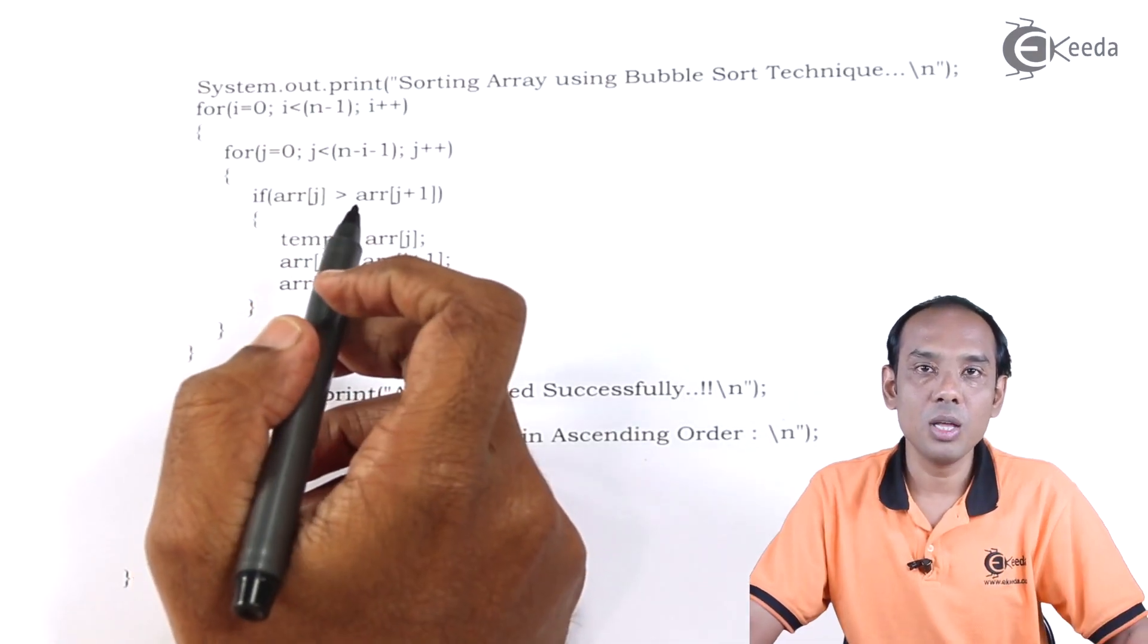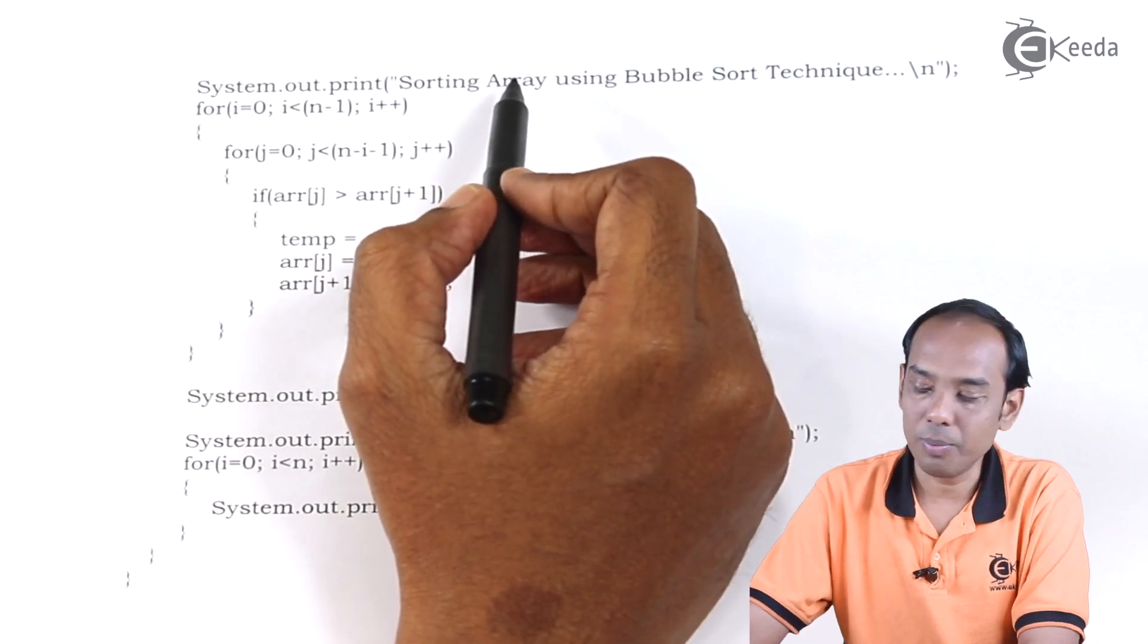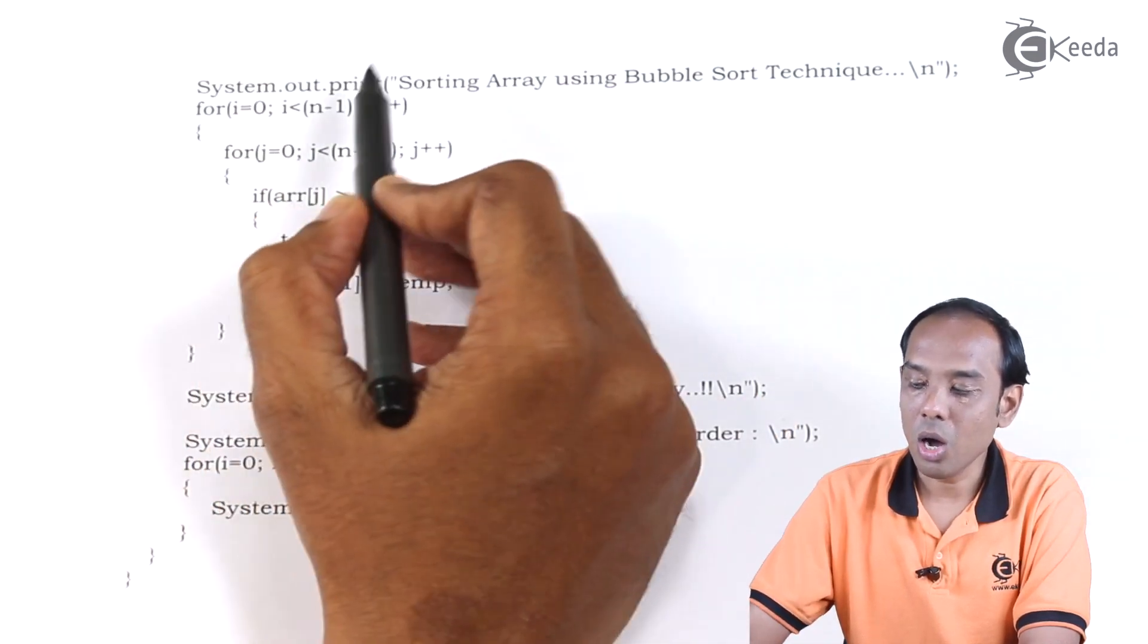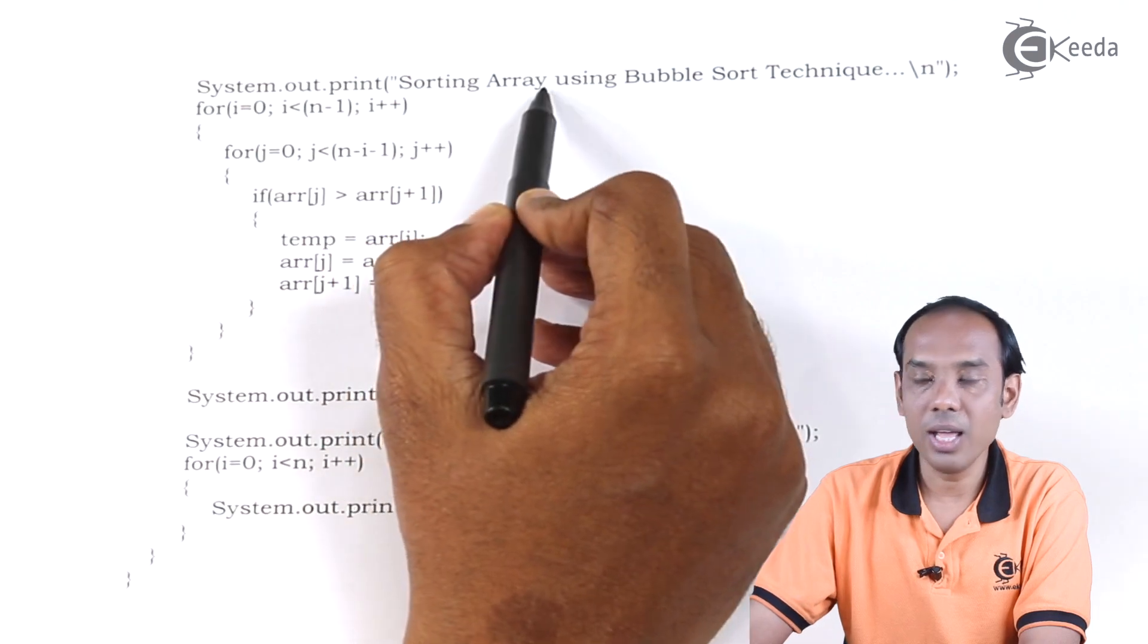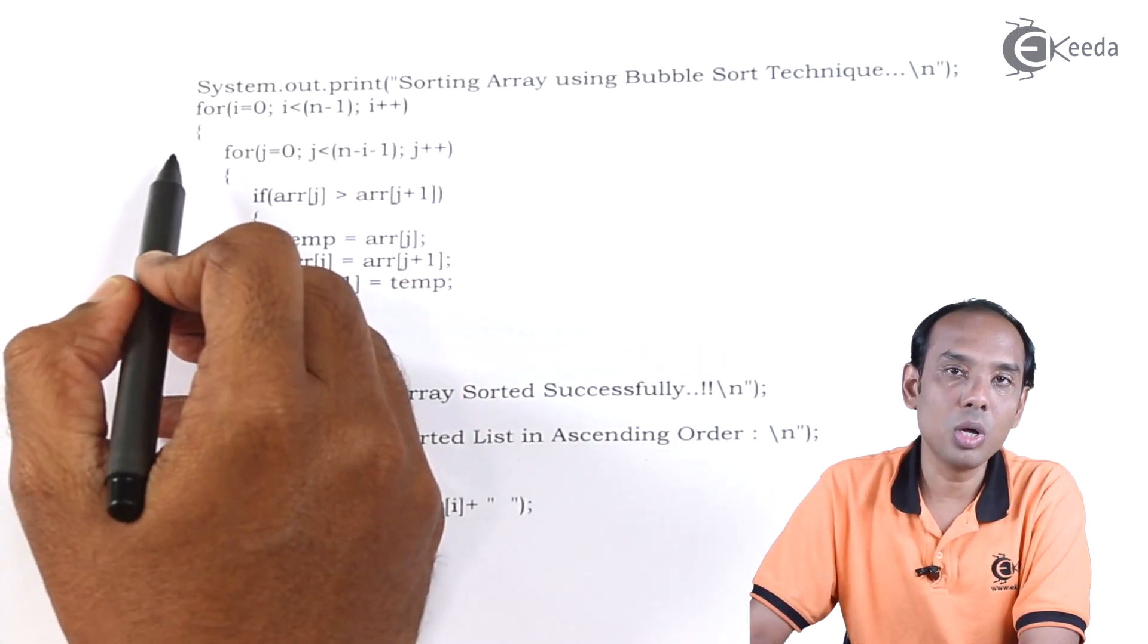Once we are done with storing the values of the array elements, then we will go for the sorting algorithm. We write down system.out.print sorting array using bubble sort technique. Then we start with the outer for loop.